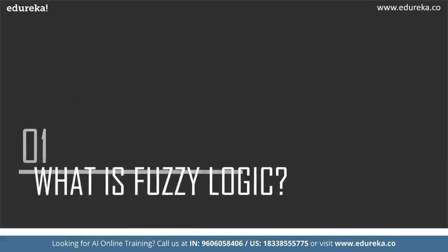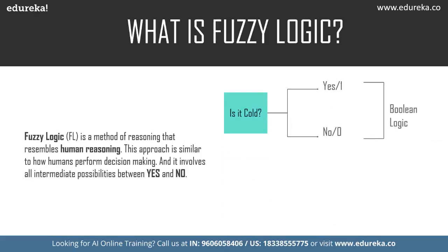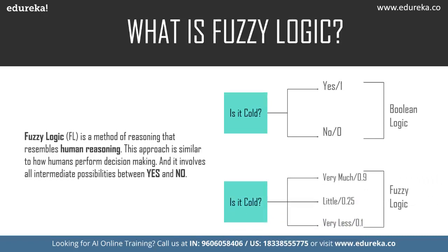Fuzzy logic is a method of reasoning that resembles human reasoning. This approach is similar to how humans perform decision-making and it involves all intermediate possibilities between a yes and a no. For example, if asked 'is it cold?' Boolean logic answers only yes or no — values of one or zero — but with fuzzy logic you get answers like 'very cold,' 'a little cold,' capturing those intermediate possibilities.